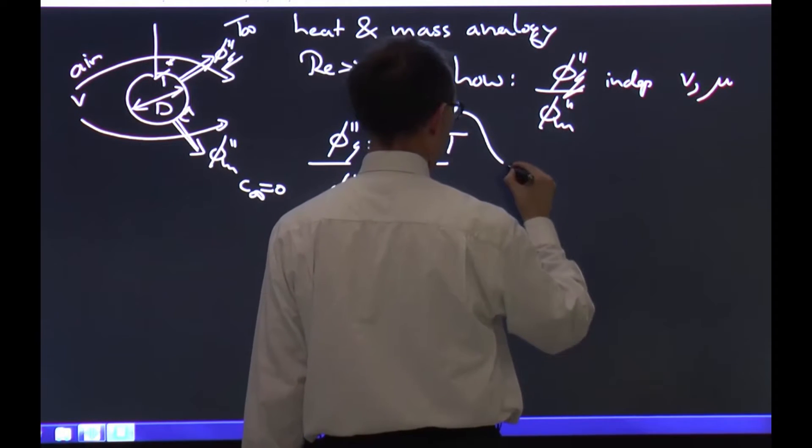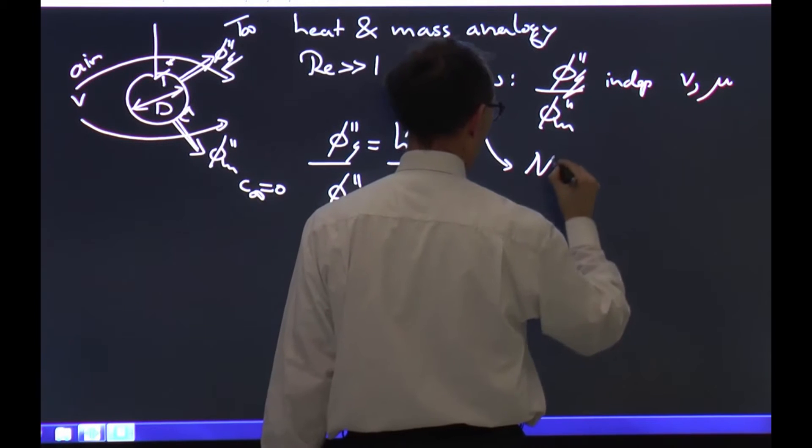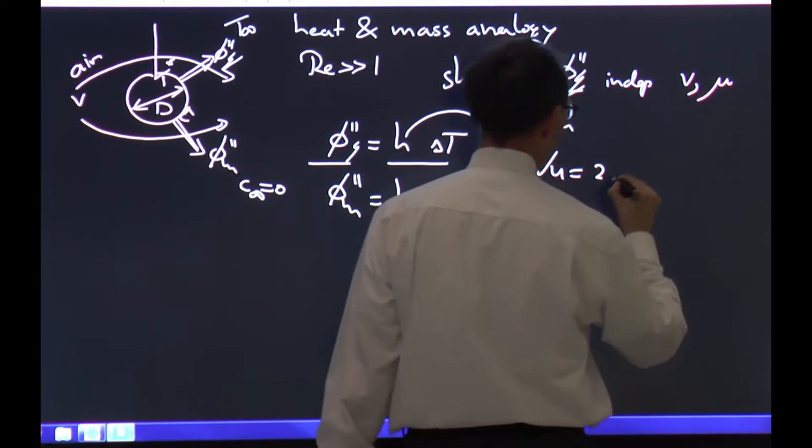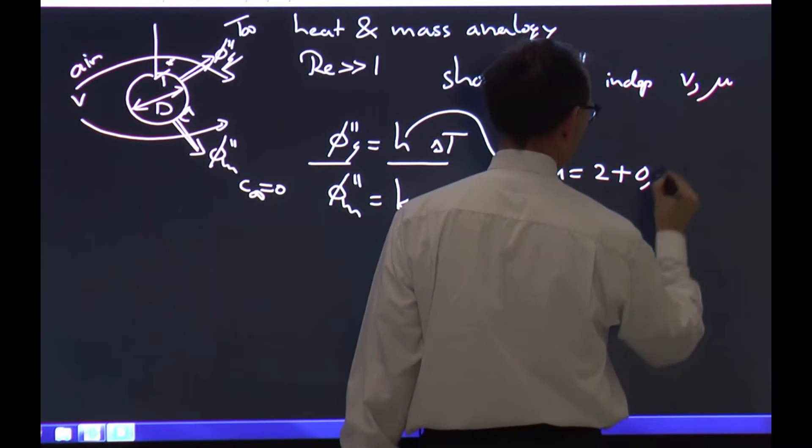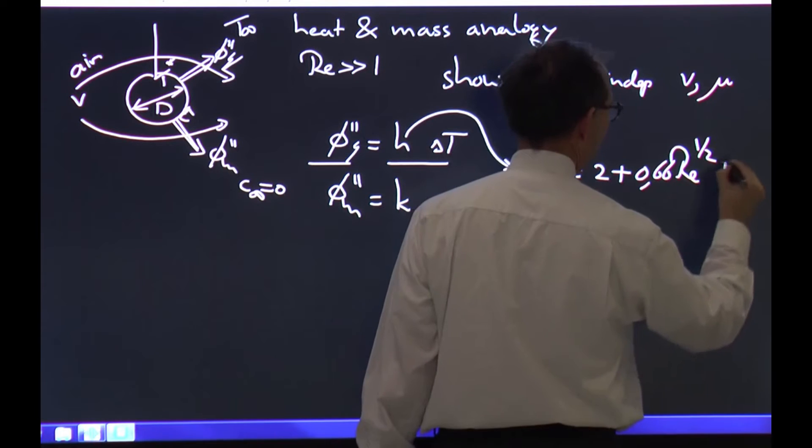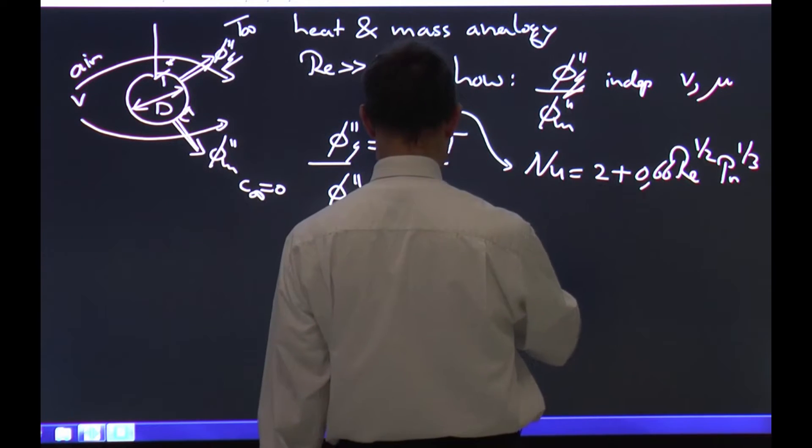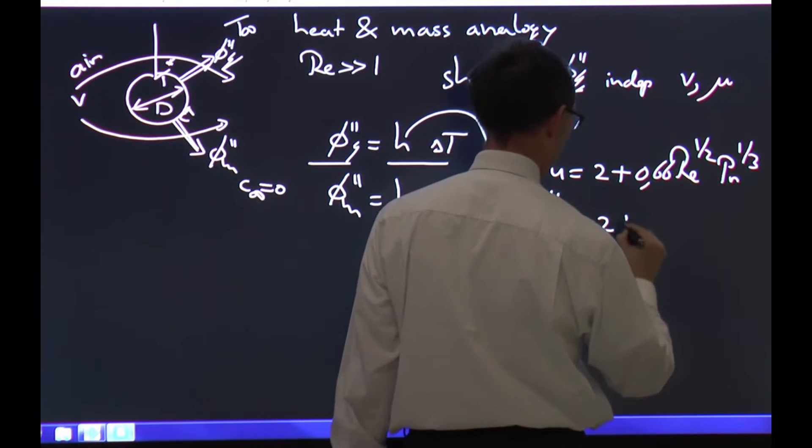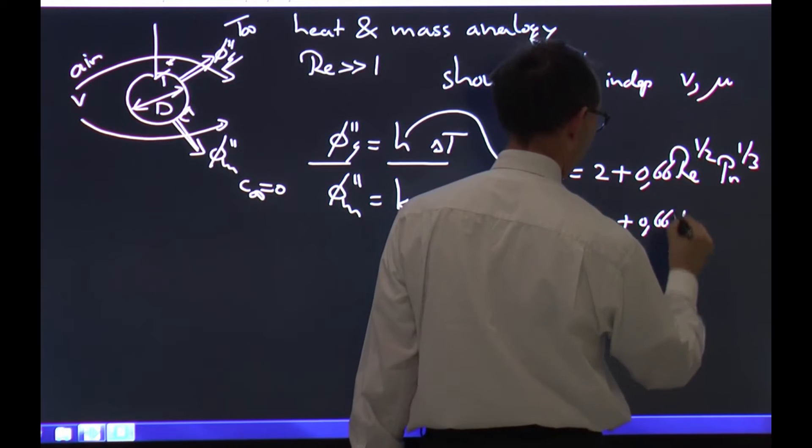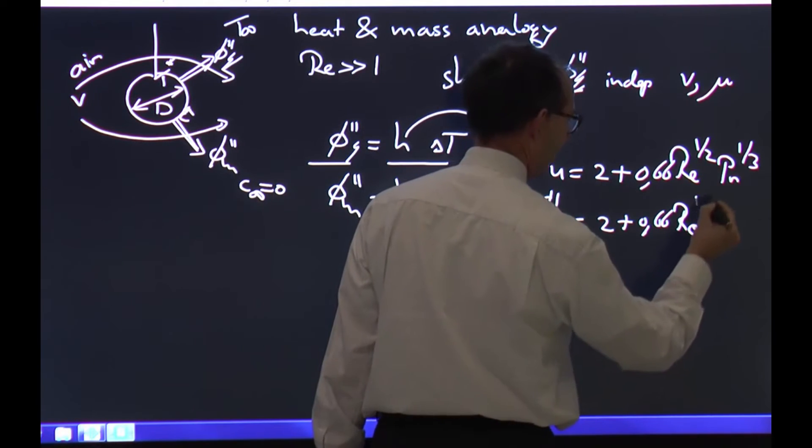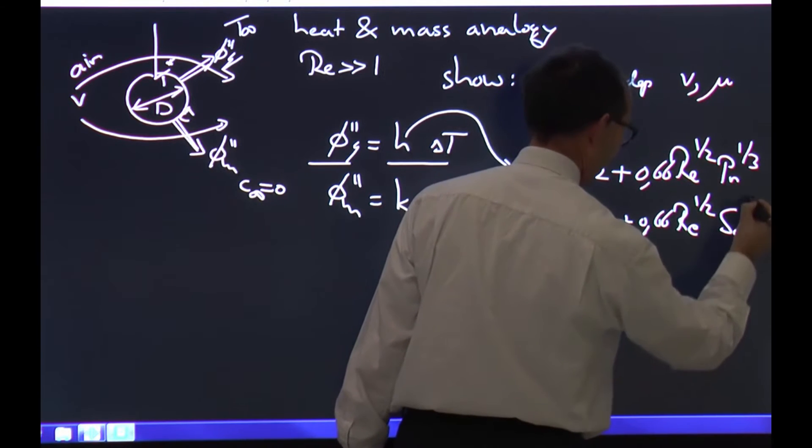For H I need the Nusselt number. This forced flow around the sphere gives me Nusselt equals 2 plus 0.66 Reynolds to the power of 1/2 times Prandtl to 1/3. And here I have the Sherwood number, not Schmidt number, equals 2 plus 0.66 Reynolds to 1/2 times Schmidt to 1/3.